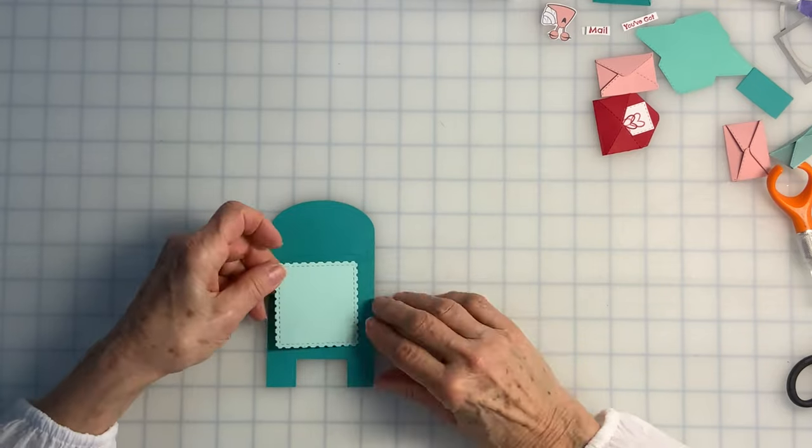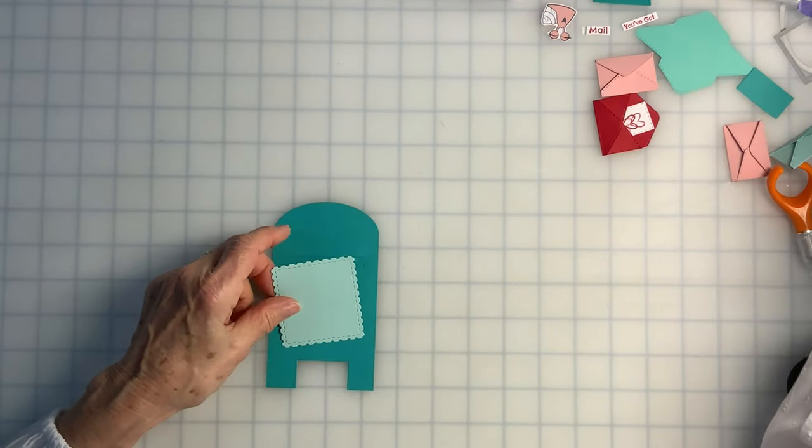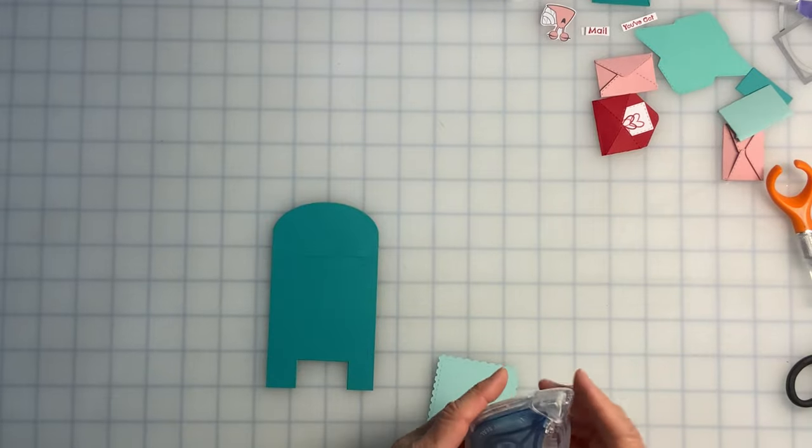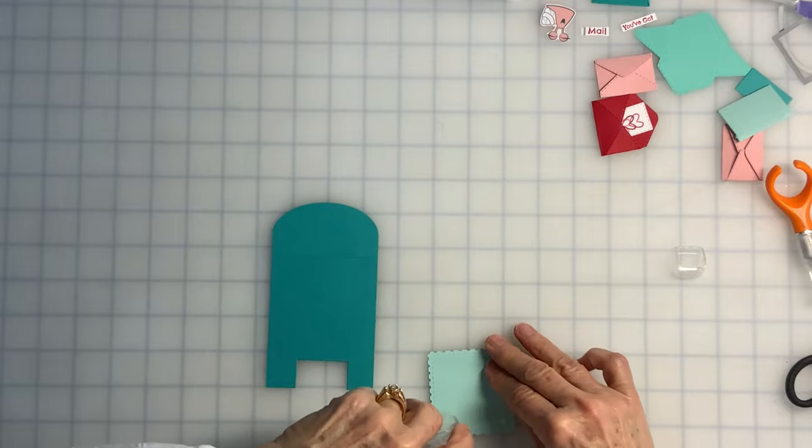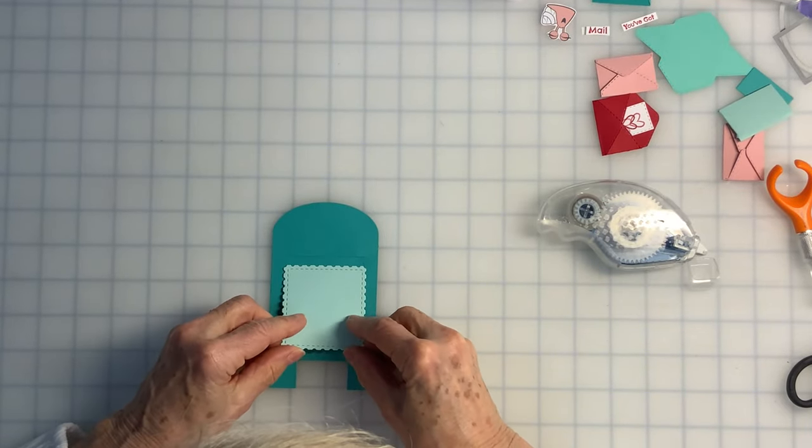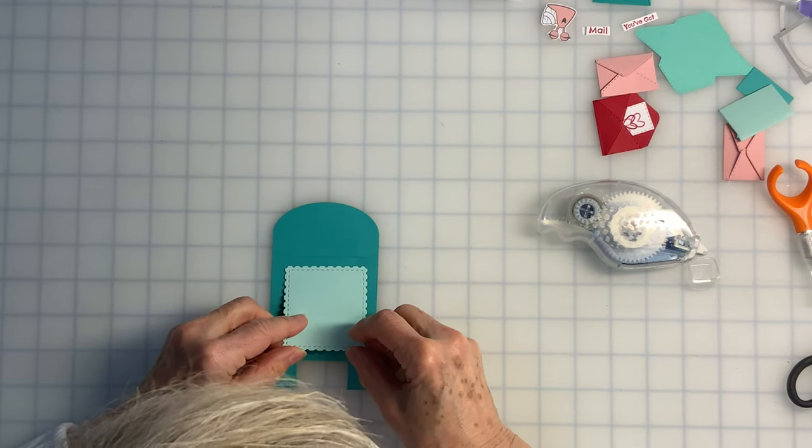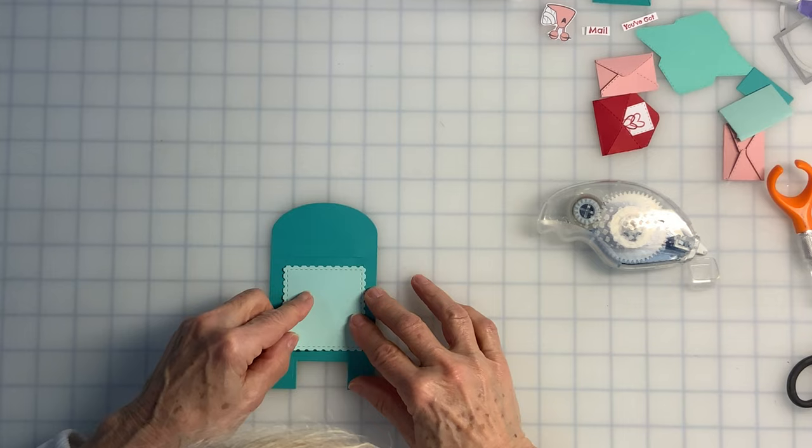So now I'm going to affix the decorative panel onto the front of my mailbox, and I will use some of the Stampin' Seal Plus for that. I'm looking for my pencil marks, and I'm just going to slide the panel up until I get to the corner, and there we go.